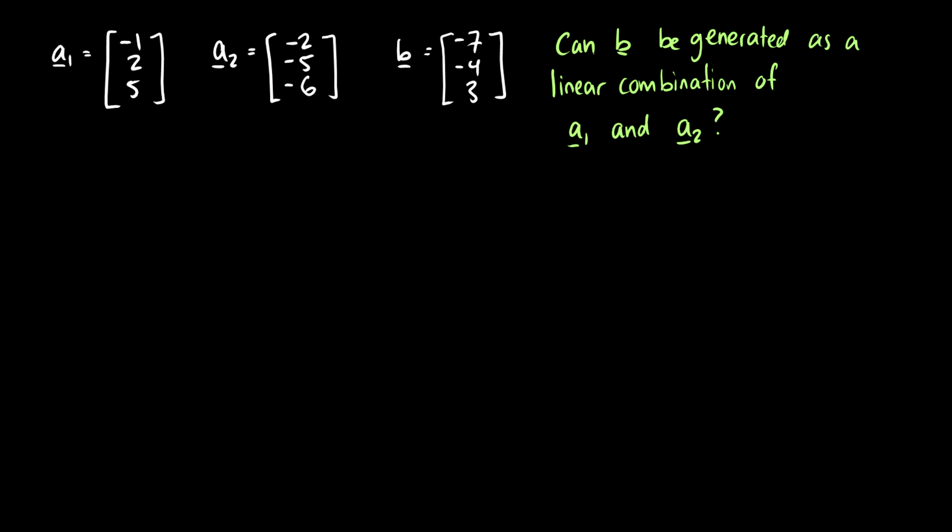So here's a question. We can ask if some vector b can be generated by a linear combination of a1 and a2. So this question is saying okay is it possible to get this vector [-7,-4,3] by having some number of a1's and having some number of a2's. Well we can solve this. So what we can do is we can put a1, a2, and b into a matrix. And we can say okay we have [-1,2,5], [-2,-5,-6], and [-7,-4,3]. And we can solve for this.